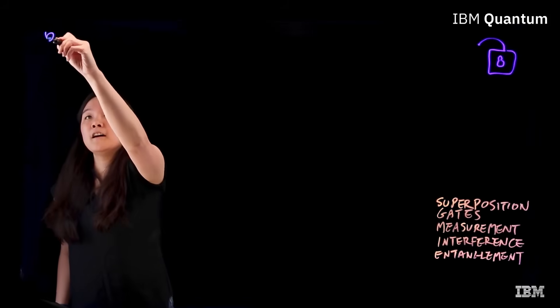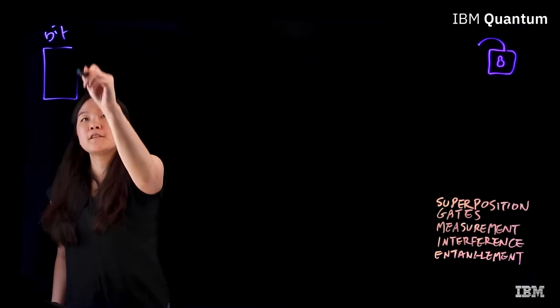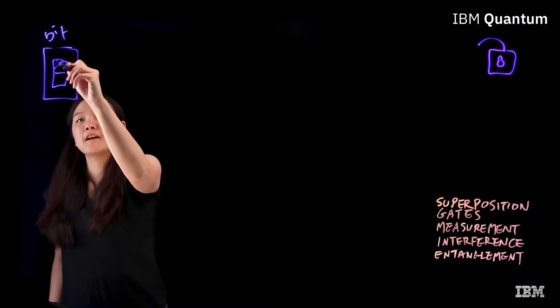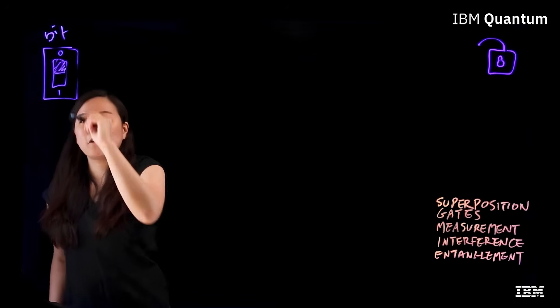But before we dive into that, let's first talk about bits. Classical computers use bits which are like switches that can be a zero or a one.